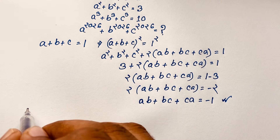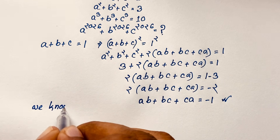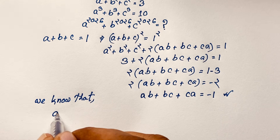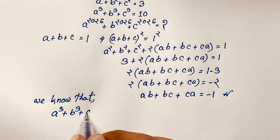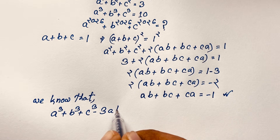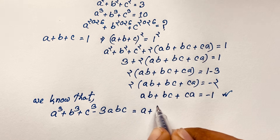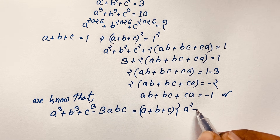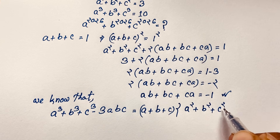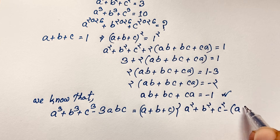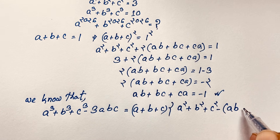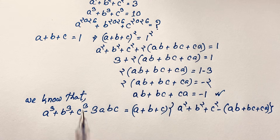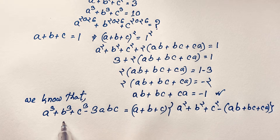Now, according to the algebraic formula, a cubed plus b cubed plus c cubed minus 3abc equals (a plus b plus c) times (a squared plus b squared plus c squared minus ab minus bc minus ca). I take the minus sign as common, so it involves ab plus bc plus ca. Remember that a cubed plus b cubed plus c cubed is equal to 10, so I substitute this value: this is 10.